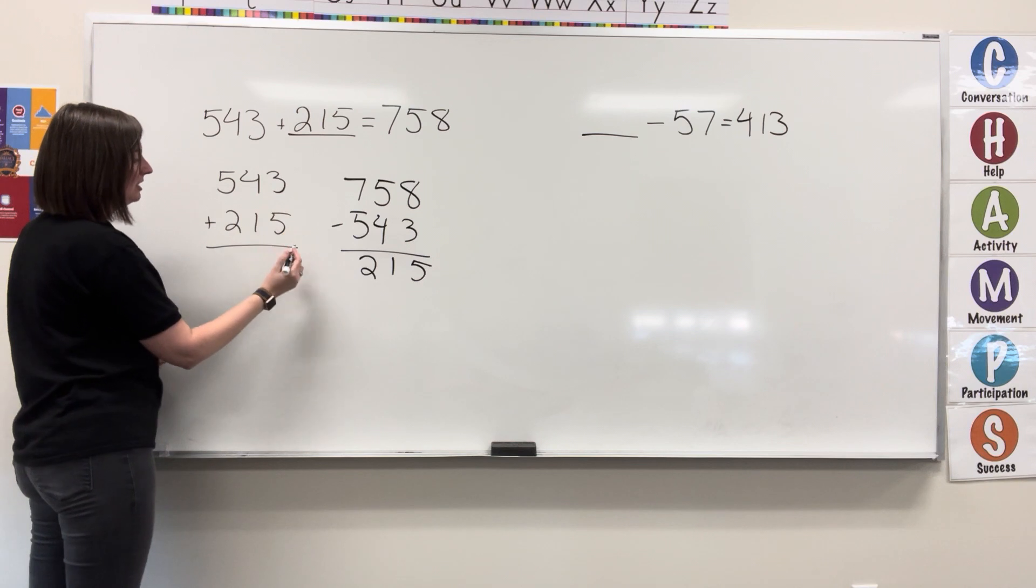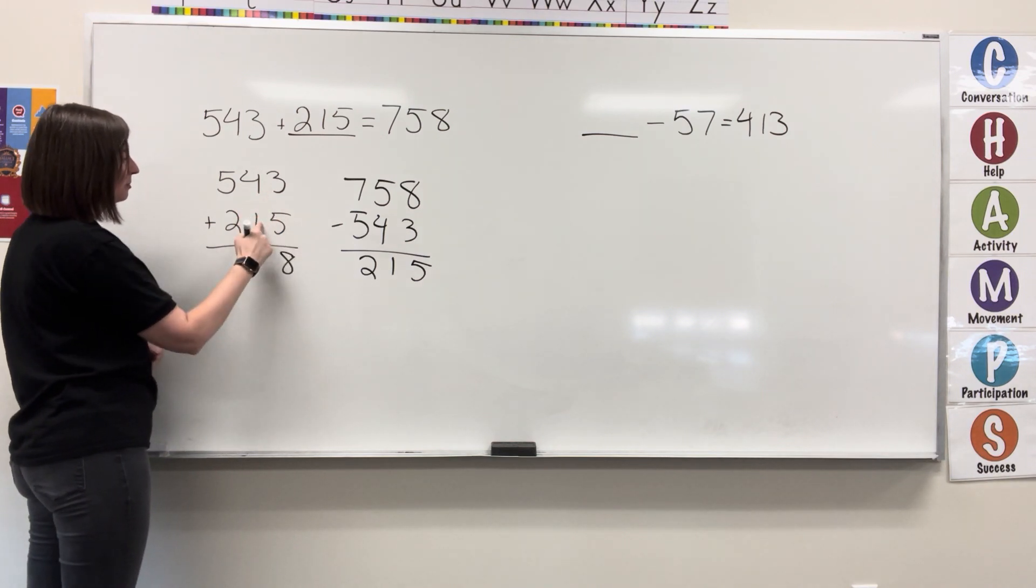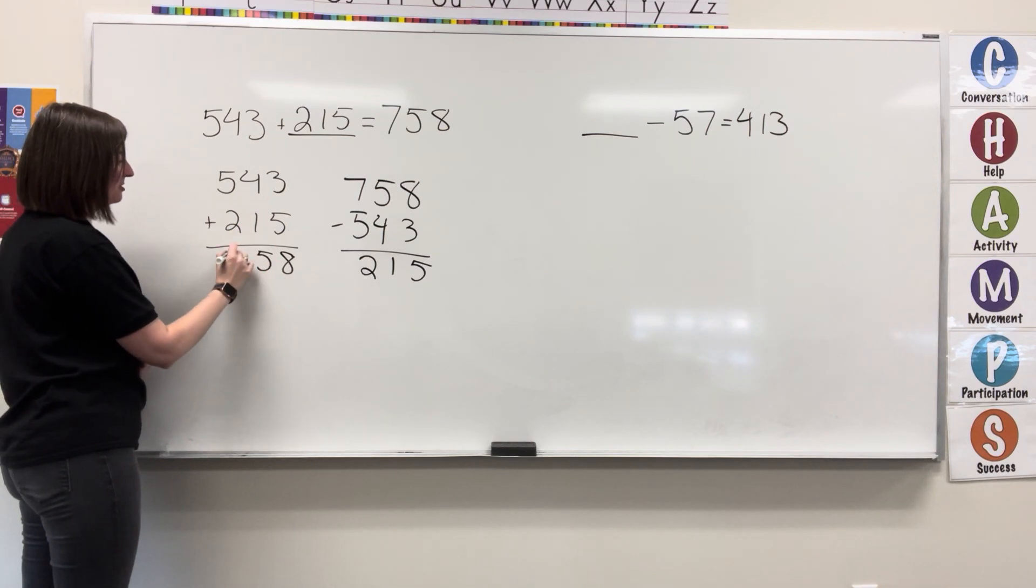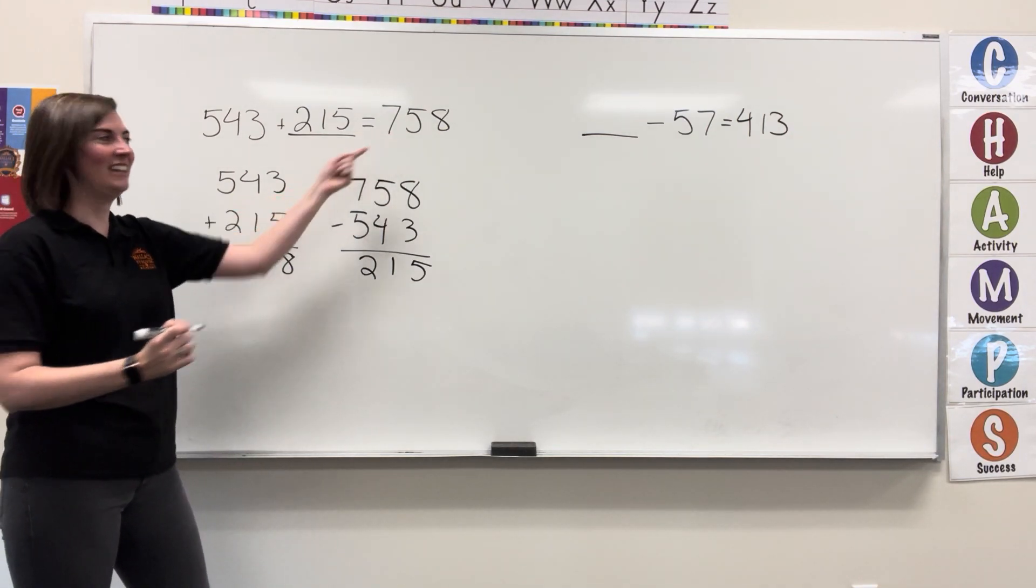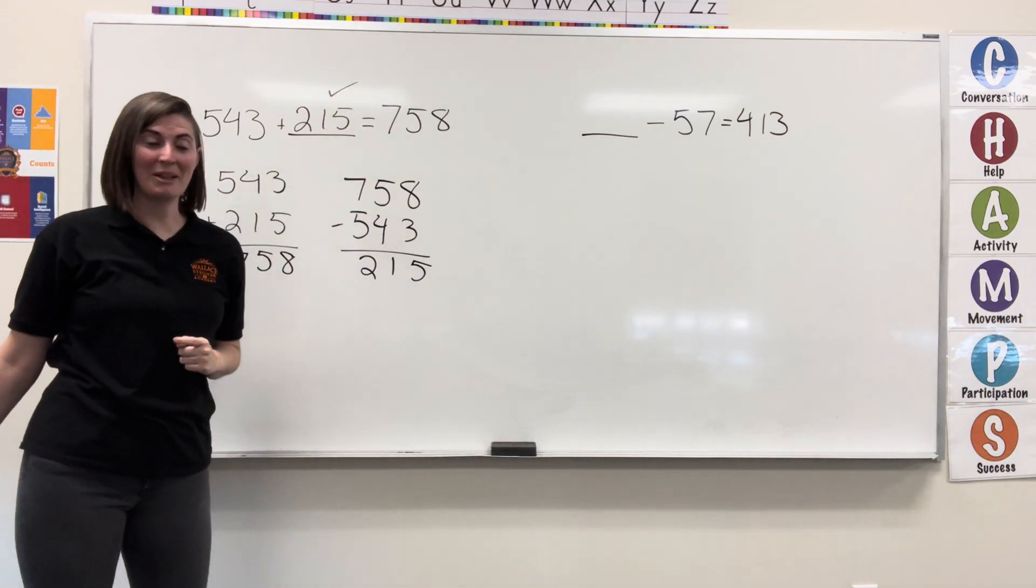3 plus 5 equals 8, 4 plus 1 equals 5, 5 plus 2 equals 7. 758, 758. 215 belongs in the blank.